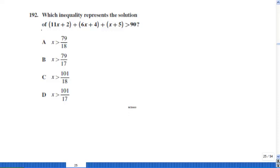Which inequality represents the solution of (11x + 2) + (6x + 4) + (x + 5) > 90? And some of you will say, oh my god, this is a hard problem, which is not. As you notice, there is always a plus sign in front of every parenthesis, which means you can rewrite the whole thing without any parenthesis.